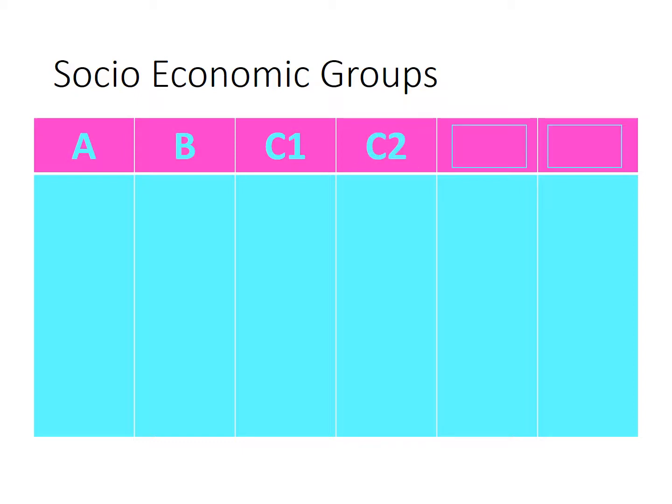So to recap: A is professional, B is managerial, C is skilled — either manual or non-manual. That makes D unskilled, so D category covers unskilled people. And then E — the nice way to put it — is state funded. E people are state funded.